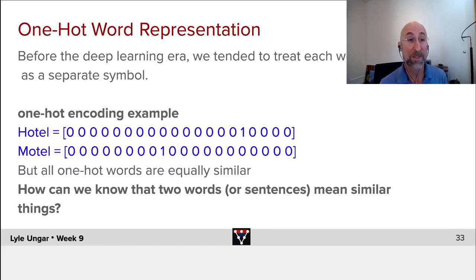Similarly, another word like motel is a different one and an equally large number of zeros. And if I ask how similar are hotel and motel, all pairs of words in one hot encoding are equally similar or dissimilar. But that means there's no generalization.